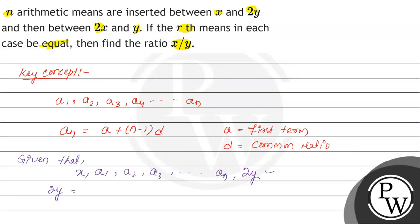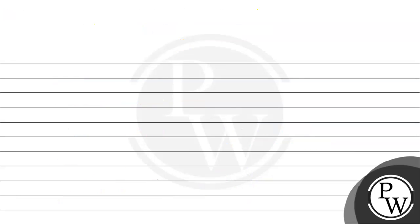So the formula gives us: x plus (n plus 1) multiplied by d1 equals 2y. That implies d1 is equals to (2y minus x) divided by (n plus 1). Mark it as equation 1.